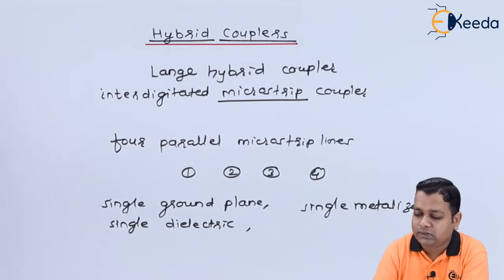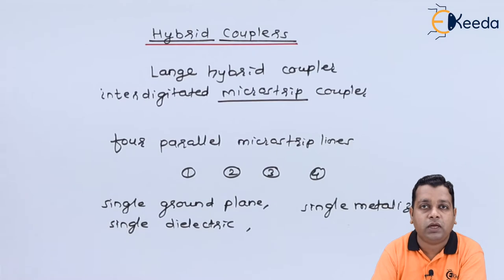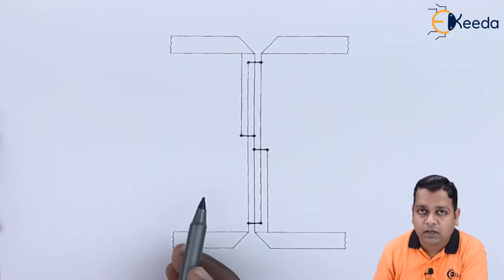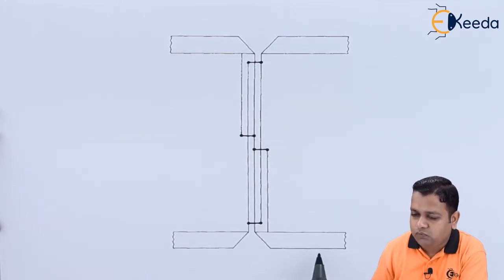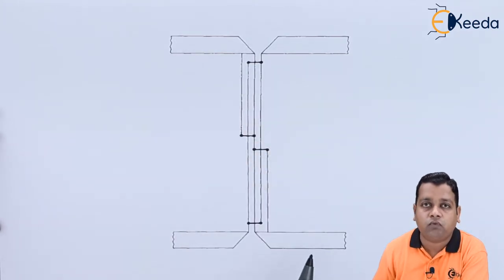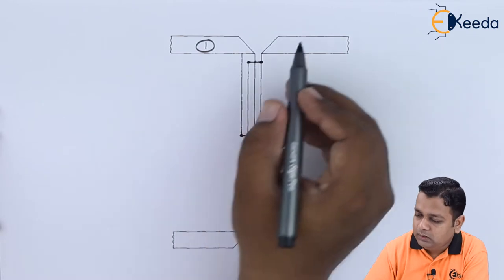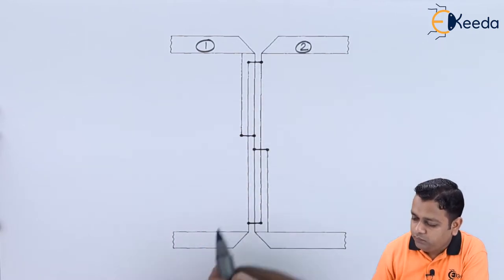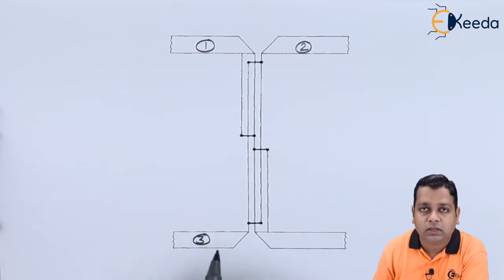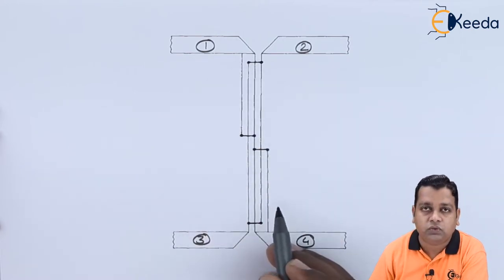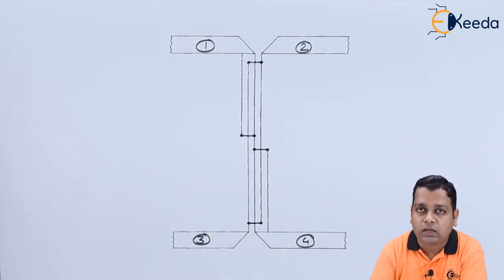Let us visualize the Lange hybrid coupler with a schematic diagram. As we see, these four elements are nothing but the four parallel microstrip lines — microstrip line number one, number two, number three, and strip line number four. These connections show the alternative tie-up between the four parallel microstrip lines.